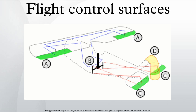Rotation about this axis is called pitch. Pitch changes the vertical direction that the aircraft's nose is pointing. The elevators are the primary control surfaces for pitch.